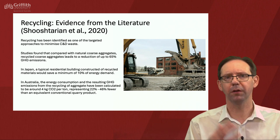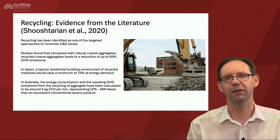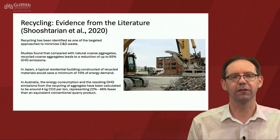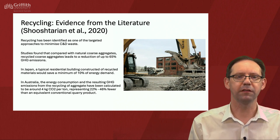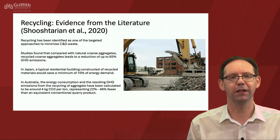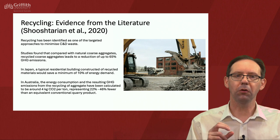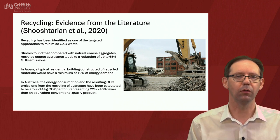As part of these projects, a colleague from the RMIT team has led a sustainability journal paper with some useful statistics from the literature review. Recycling is identified as one of the targeted approaches to minimise C&D waste. For example, recycled aggregates replacing natural resource coarse aggregates can lead to a reduction of up to 65% in greenhouse gas emissions. In Japan, a typical residential building constructed with recycled materials will save at least 10% of energy demand. In Australia, the energy from recycling aggregate results in around 4 kg of CO2 per tonne, representing 22% to 40% fewer emissions than equivalent conventional quarry product. Different places, materials and recycling methods yield different benefits, but we can start seeing real gains the more recycling we do for construction and demolition waste.